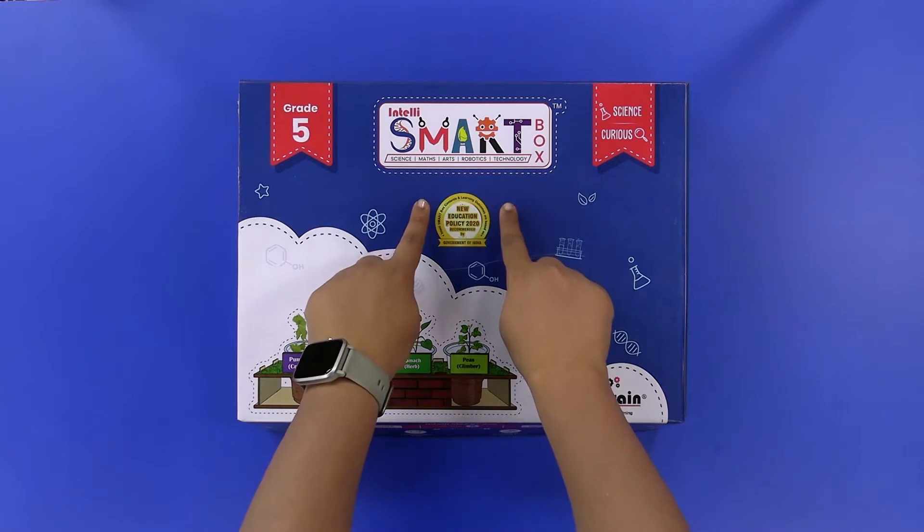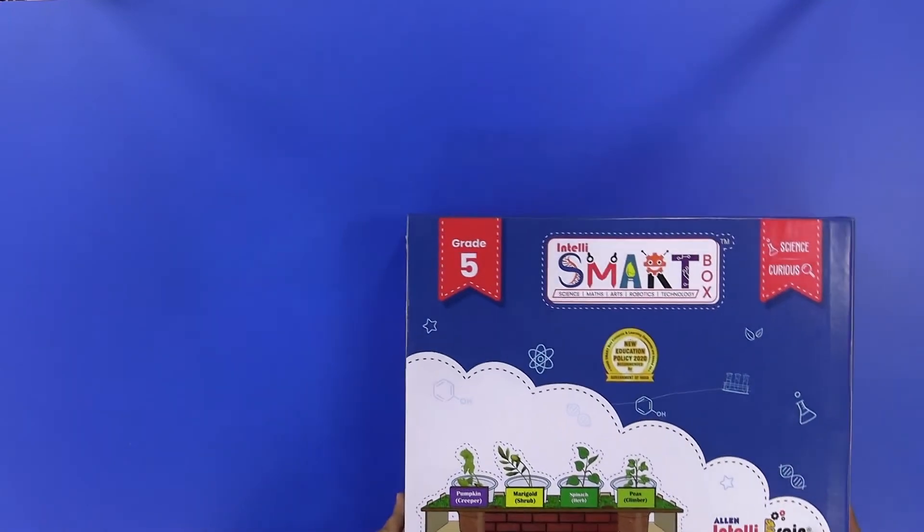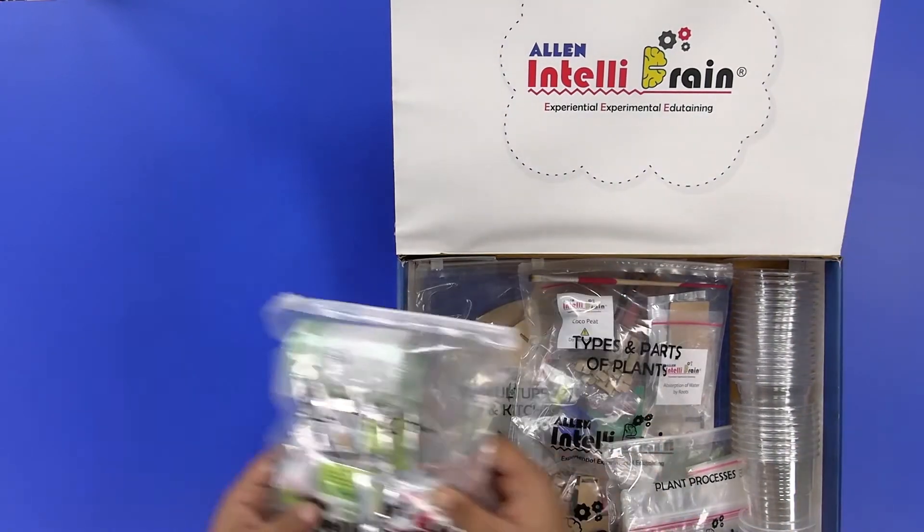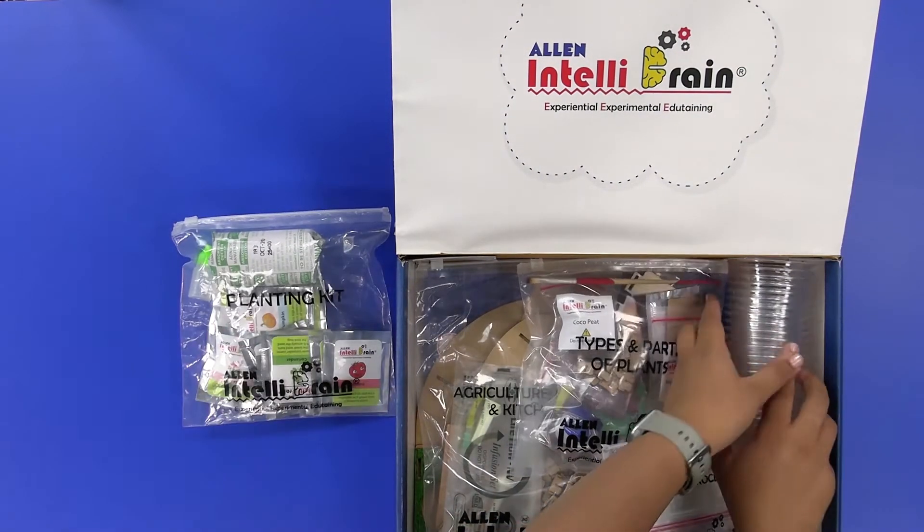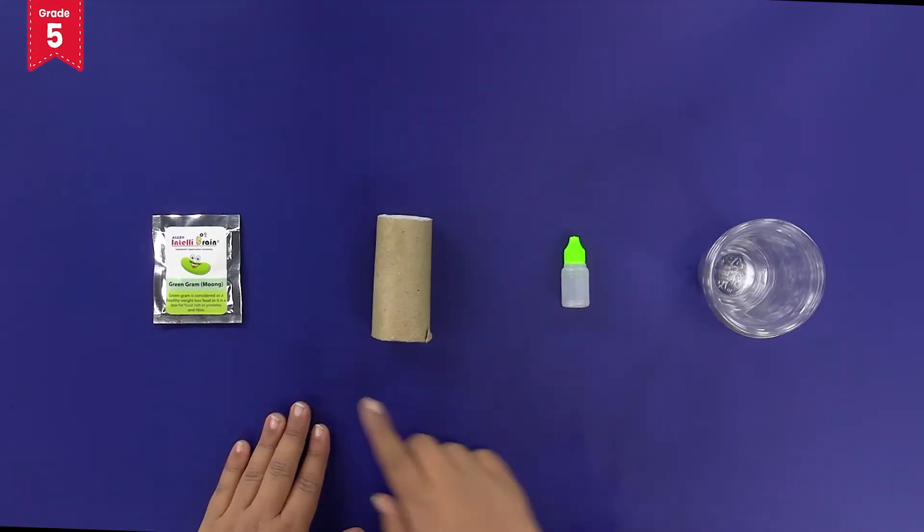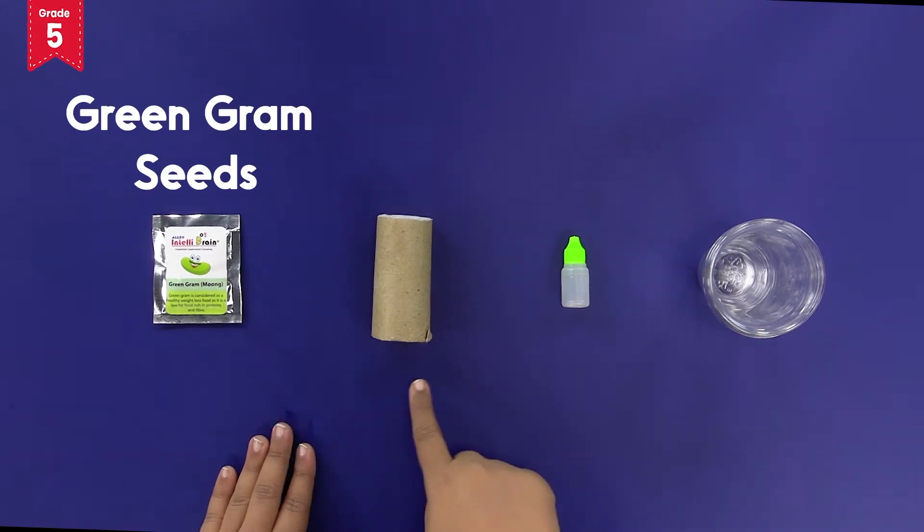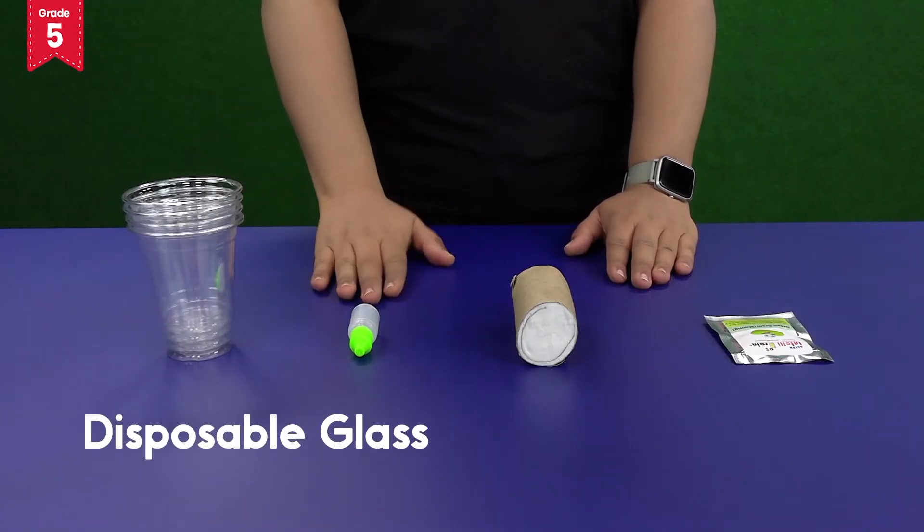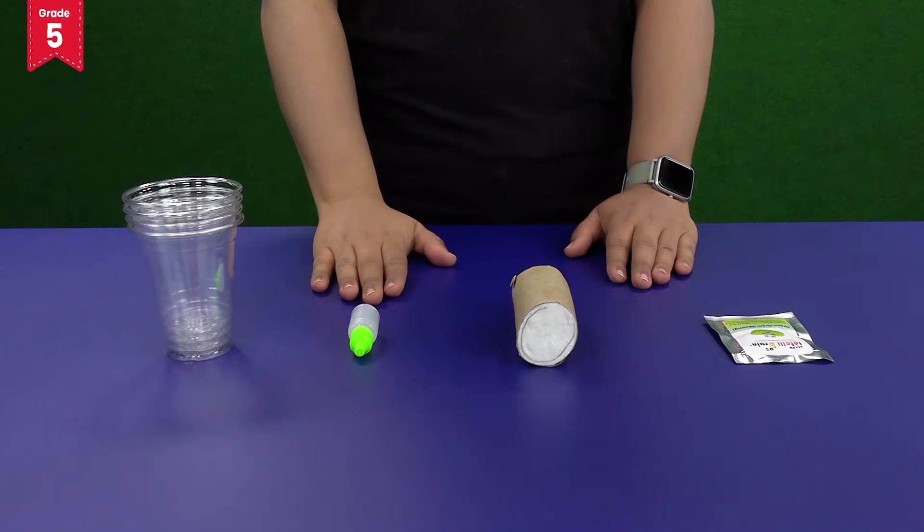From the IntelliSmart box, take out the planting kit and the disposable glasses. Take out the packet of green gram seeds, cotton and empty dropper bottle from the planting kit. Also take out four disposable glasses from the IntelliSmart box.